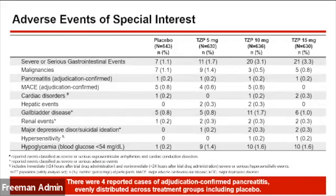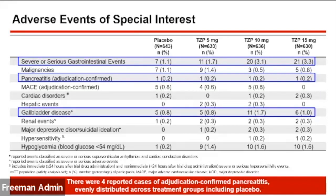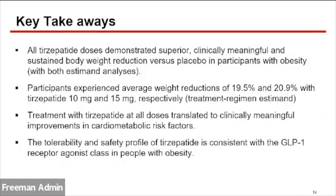In terms of adverse events of special interest: serious gastrointestinal events were evenly spread, occurring slightly more in the tirzepatide groups but not many overall. For pancreatitis, there were four adjudicated confirmed cases evenly distributed across treatment groups including placebo — one in each. For gallbladder disease, there were five in placebo, five in tirzepatide 5, eleven in tirzepatide 10, and six in tirzepatide 15. Increased acute cholecystitis in the tirzepatide groups has also been observed in bariatric surgery studies involving significant weight loss.